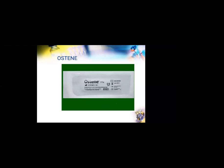Ostene is a product that covers the disadvantages of bone wax: it is biocompatible, made of naturally occurring alkaline polymers, does not stay at the site for more than 48 hours, resorbs easily, and does not carry a risk of foreign body granuloma formation.